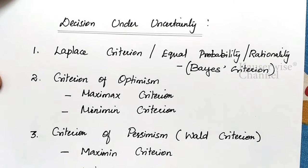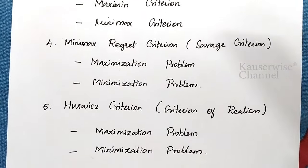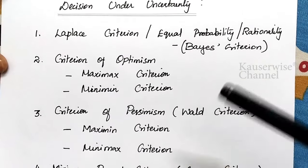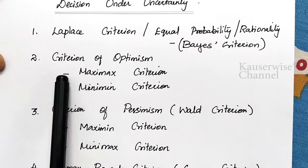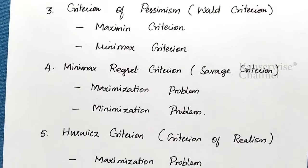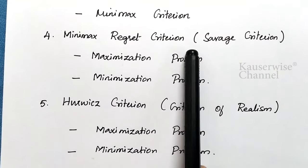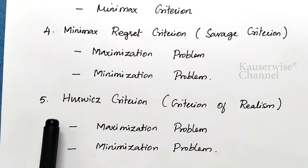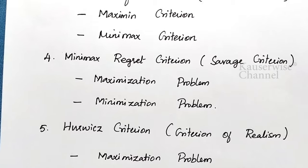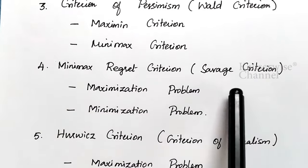Now let us see the problem. These are the five criteria which come under uncertainty. In the previous video, we discussed the first three methods: Laplace criterion, criterion of optimism, and criterion of pessimism. Here we are going to see the remaining two: the fourth, Minimax regret criterion (otherwise called savage criterion), and the fifth, Horvitch criterion (otherwise called criterion of realism).